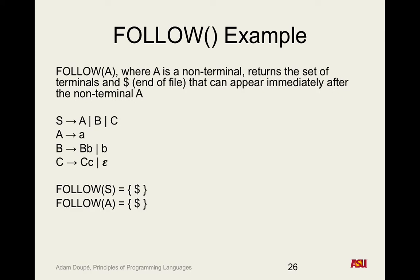What about B? The first production B goes to big B, little b — so we look at the right-hand side. What's going to follow a big B? In this case it's clearly got to be a little b after big B. So we add little b. And end of file? Because we also have the rule S goes to big B — so by the same reason we put end of file into the follow set of A, end of file goes into the follow set of B.